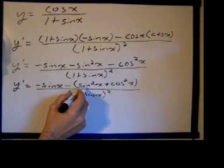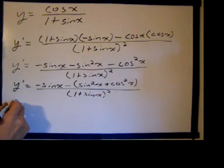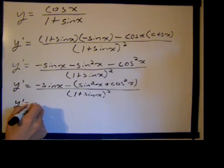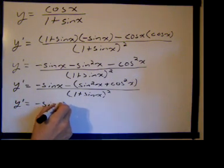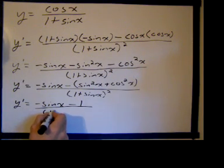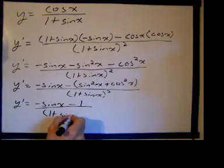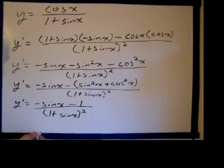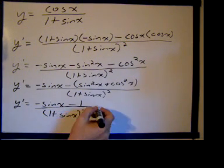The sine squared plus the cosine squared is 1. So I have y prime equals negative sine of x minus 1 divided by 1 plus the sine of x, quantity squared. Now if I factor out a negative 1 from the numerator, I get negative 1 times sine of x plus 1 over 1 plus the sine of x, quantity squared.